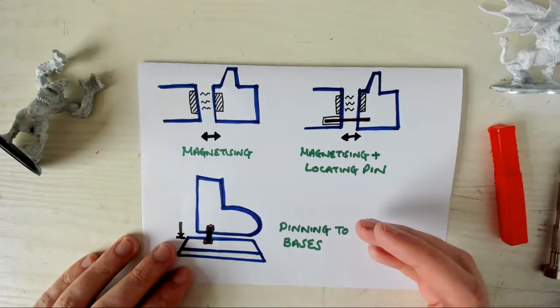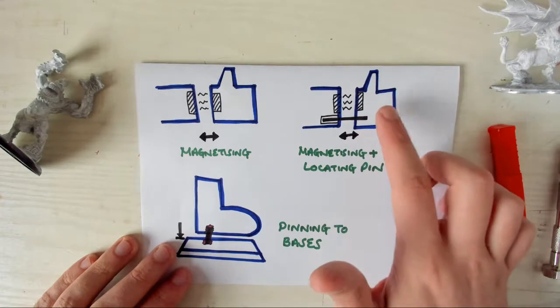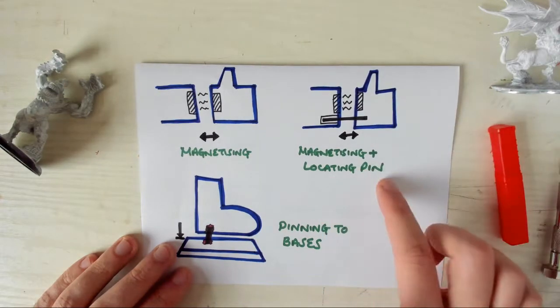You can combine magnetising with pinning. The magnet holds the bits in place, and the pin acts as a locating peg, to make sure you get the parts the right way around, and the right orientation.